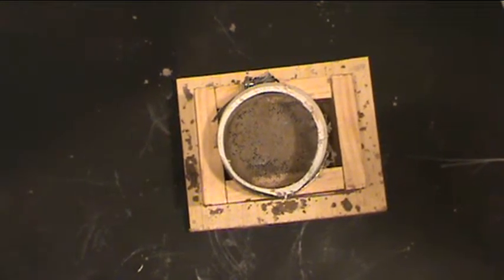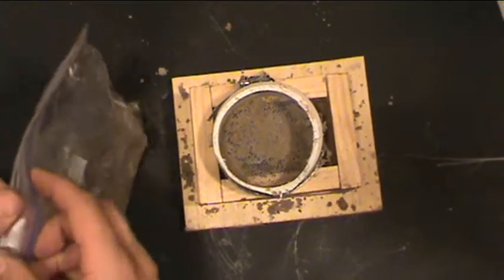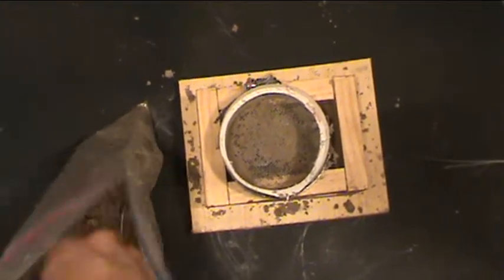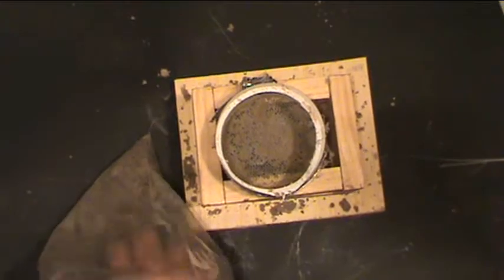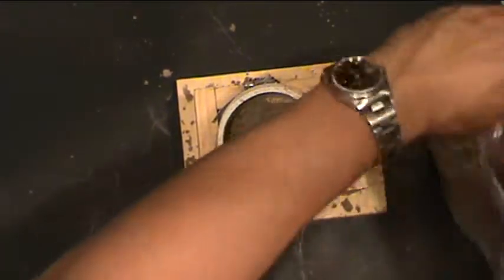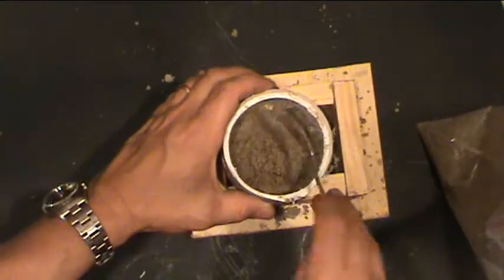Now we're going to riddle the sand in the same way that we did on the other side, and we're going to fill up this top half of our flask. This is the cope of the flask. The drag is the bottom part.